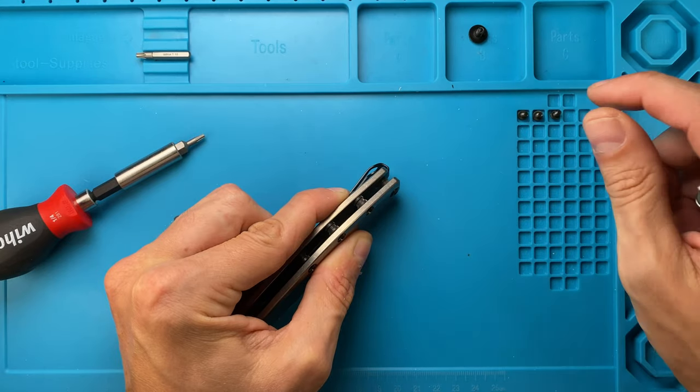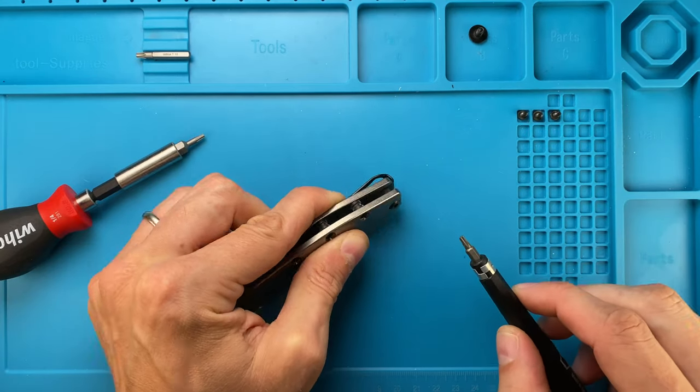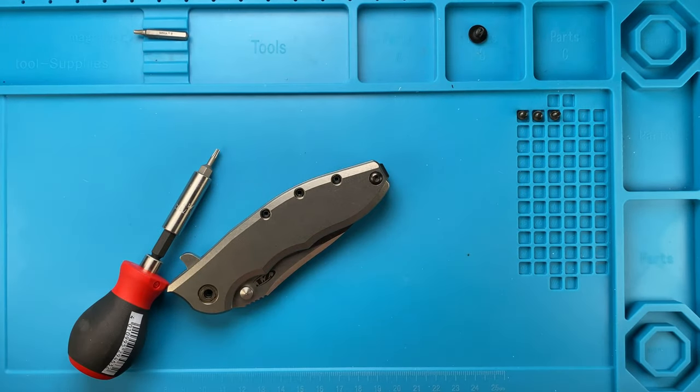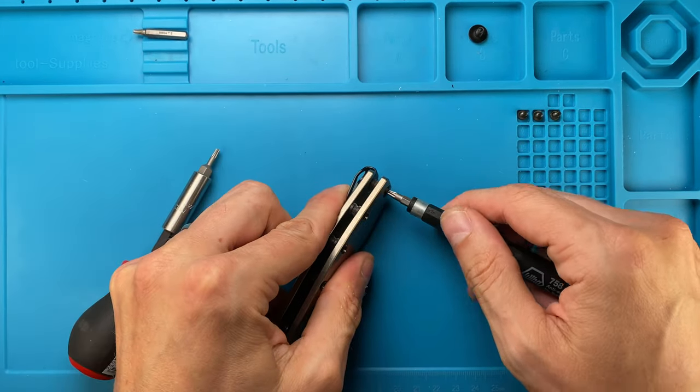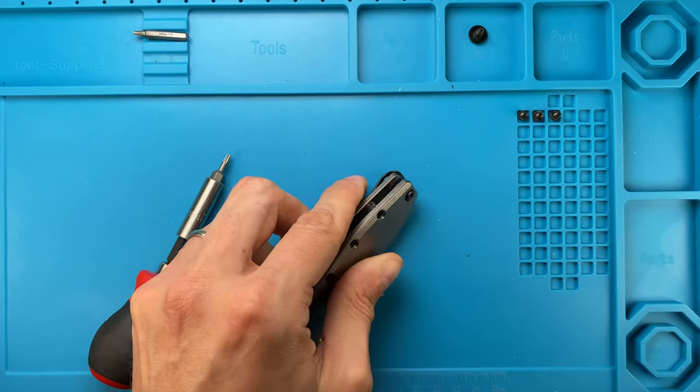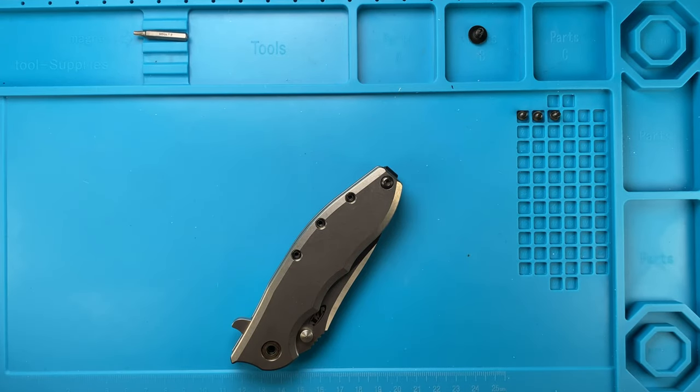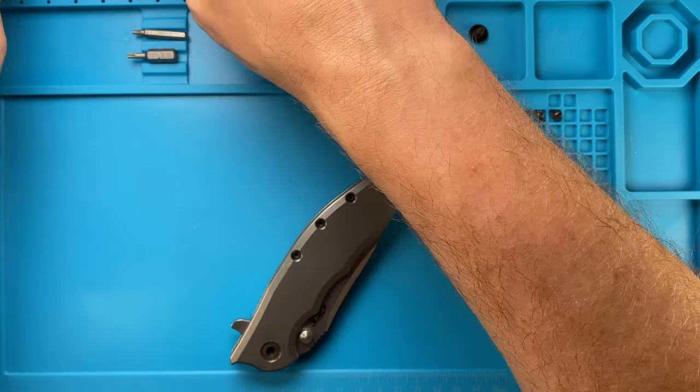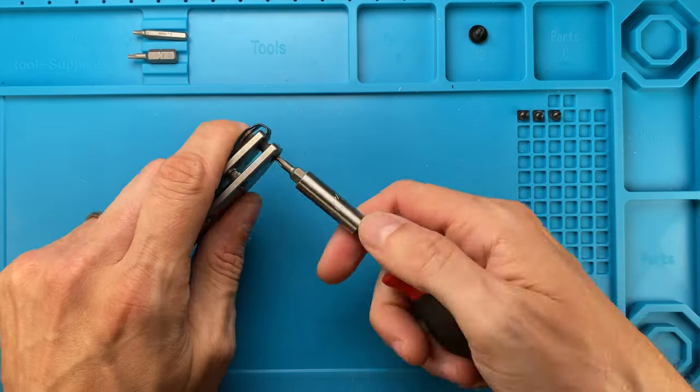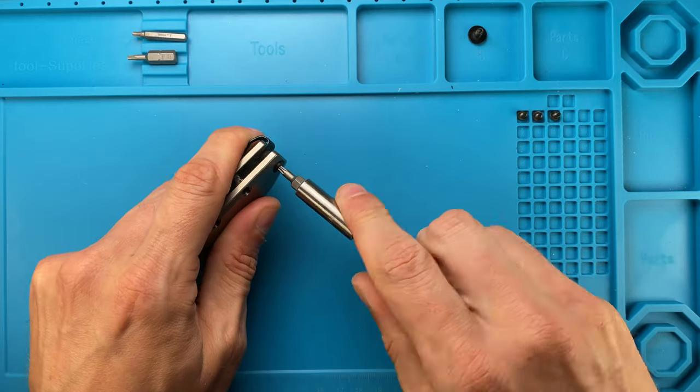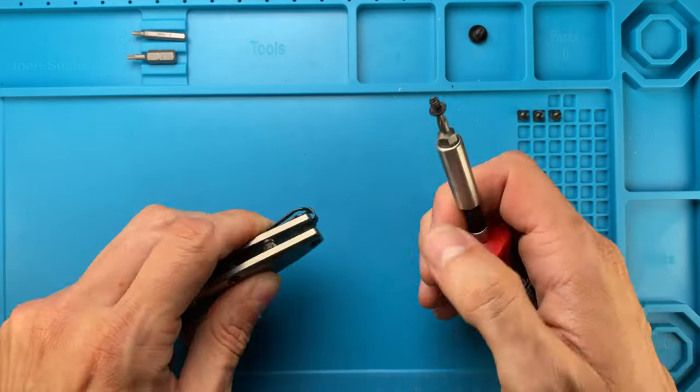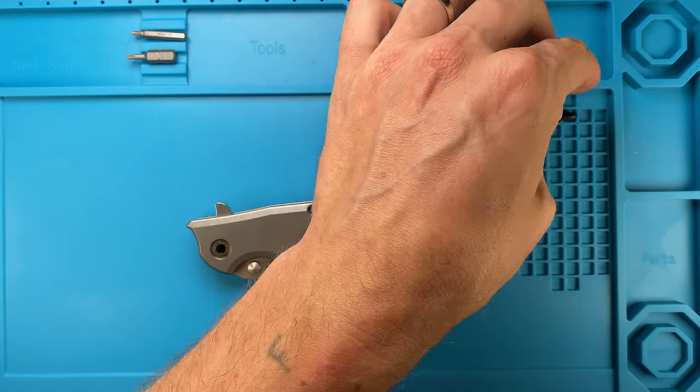The clip screw is a T10, so you're just going to switch that. Since it's probably loctited in, you're going to need a T10 and I'm just going to use this bit because I can apply more torque with the handle being thicker like that.